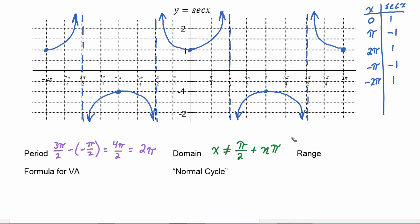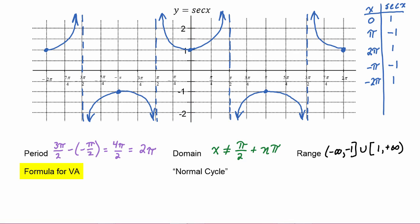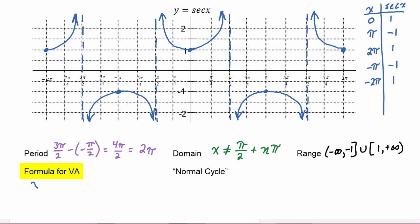The range of the graph goes forever in the negative infinity direction but only up to negative one for that piece, so we have from negative infinity to negative one, union — because then from negative one it jumps up to positive one and goes on to positive infinity — union one to positive infinity. Now the formula for the vertical asymptotes: everywhere the x values cannot exist in the domain is because there is a vertical asymptote at that location. So the formula for the vertical asymptotes is x equals pi over two plus n pi.